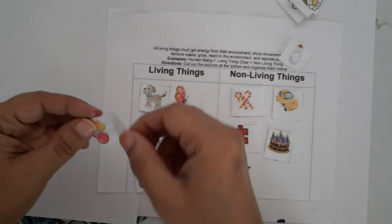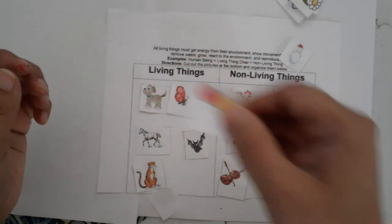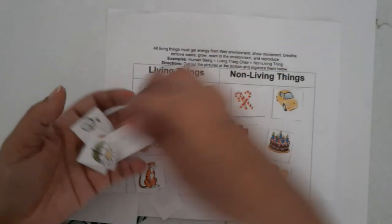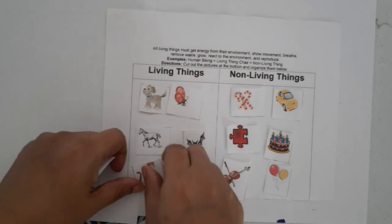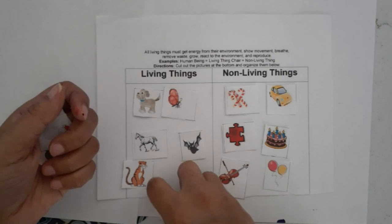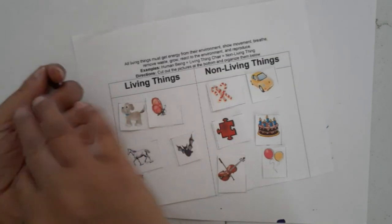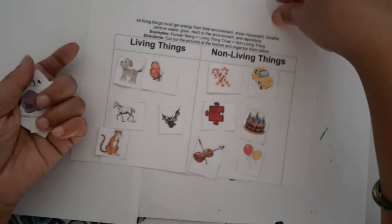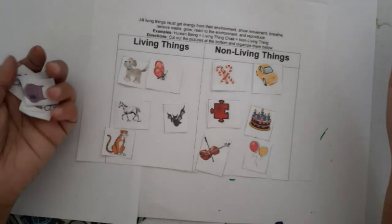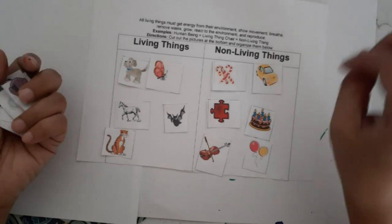A balloon is non-living. I've created printable worksheets for preschoolers where they can practice identifying living and non-living things. Children can use a pencil and eraser to complete these activities.